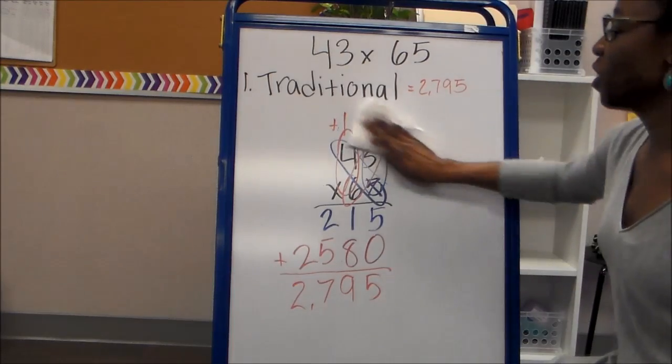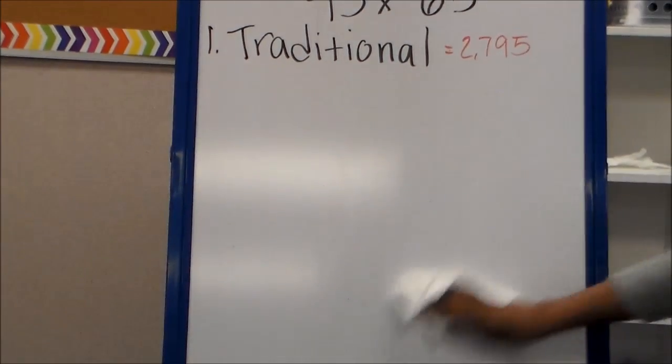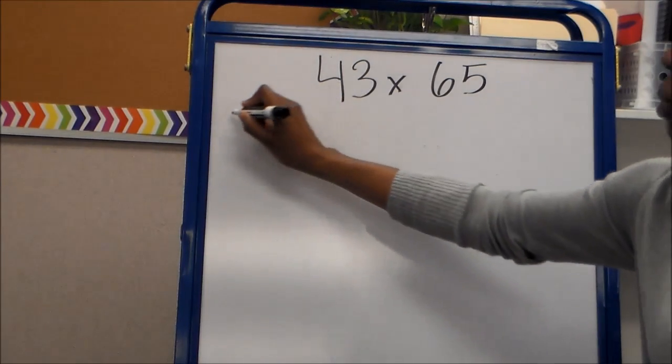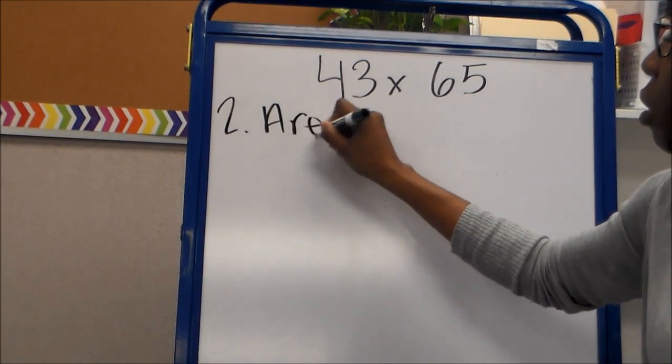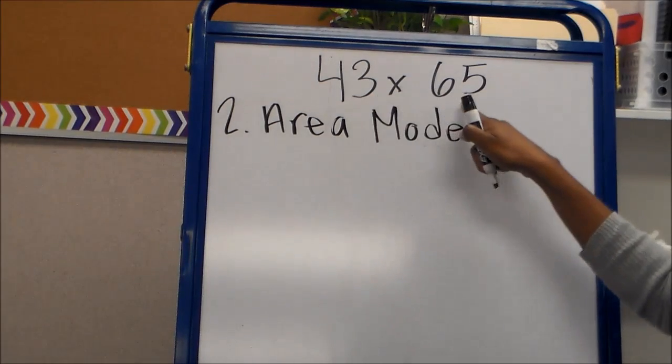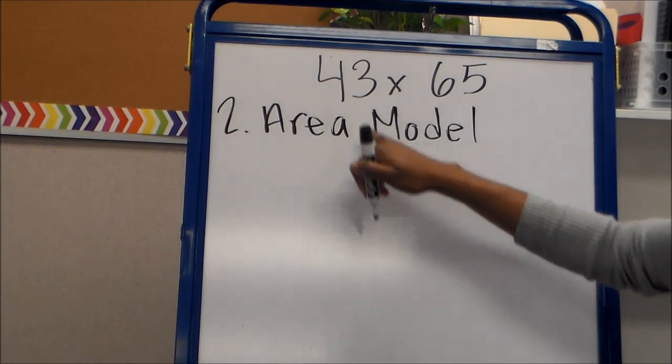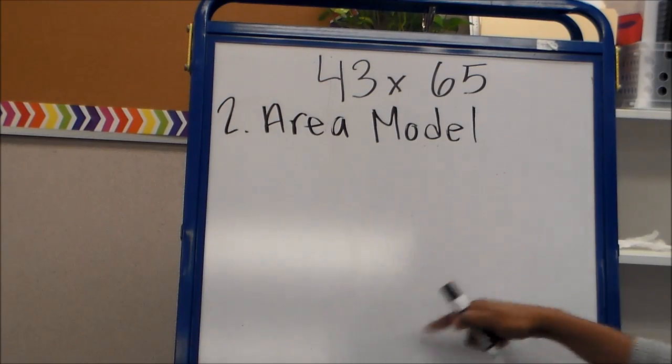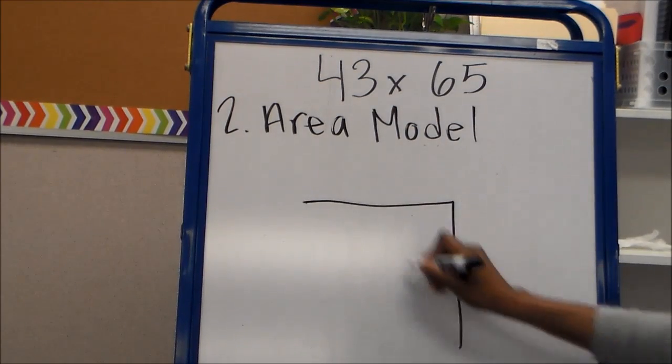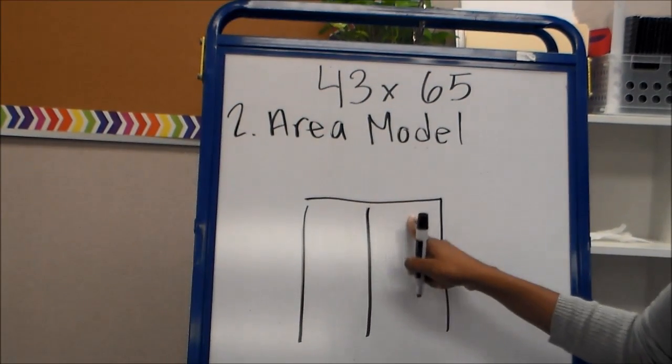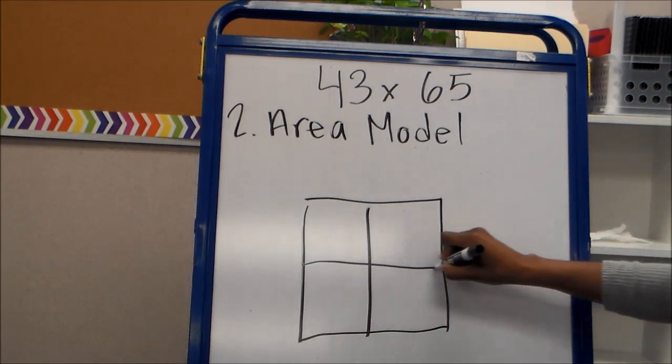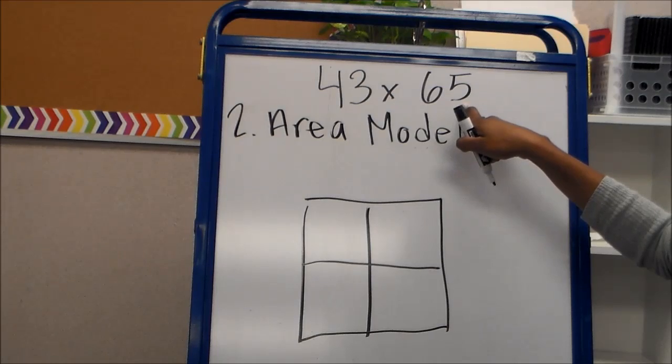Okay, so another way, the second way we can do this is the area model way. Area model way of multiplying. So we have 43 times 65. The first thing we're going to do is write each number in expanded form around an array. So the first factor has two digits, so we're going to have two columns in our array, one column for each digit. The second factor has two digits, so we're going to have two rows in our array, one for each digit in our factor.